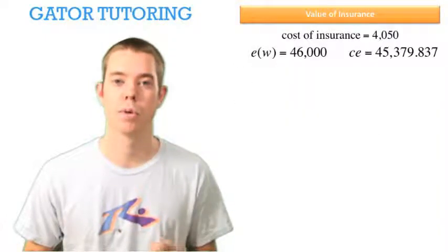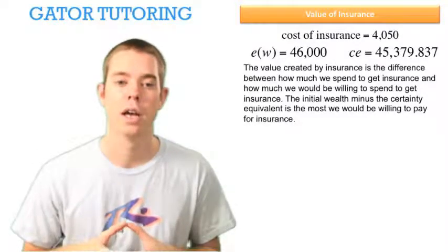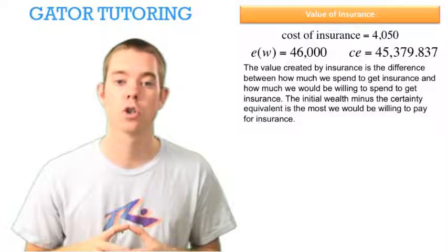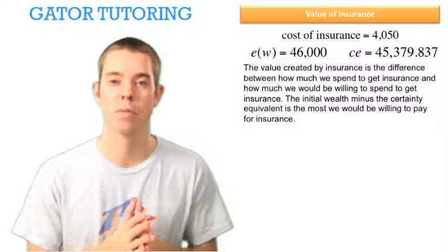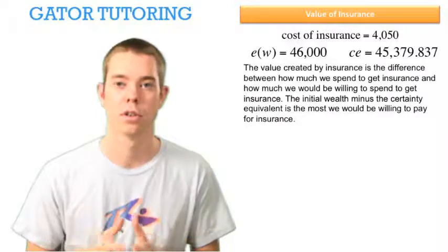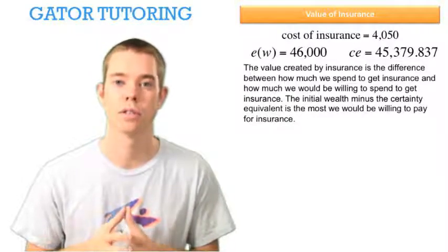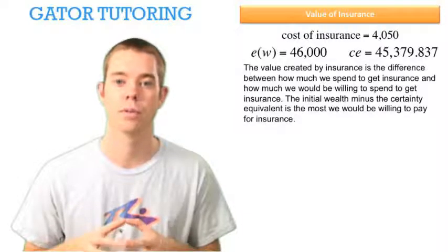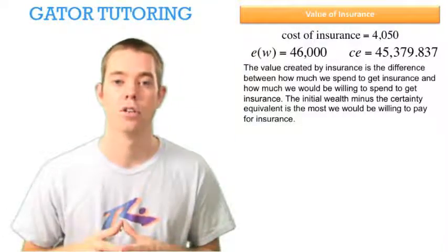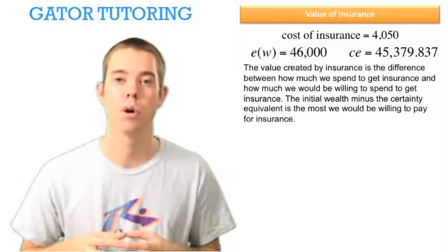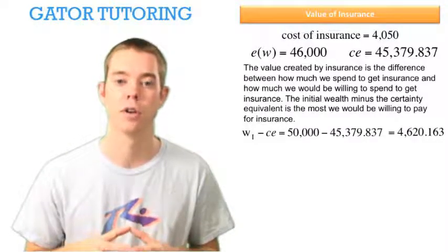Now we've found the cost of insurance, the expected wealth, and the certainty equivalent. The value created by insurance is the difference between how much we actually spend to get insurance and how much we would be willing to spend. The initial wealth minus the certainty equivalent is the most we'd be willing to pay for insurance, because the certainty equivalent is the single amount we'd happily accept to avoid all risk. Starting with $50,000, our certainty equivalent was roughly $45,379.84, so $50,000 minus the certainty equivalent gives us $4,620.163 — that's the most we'd be willing to pay.